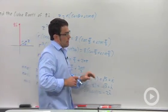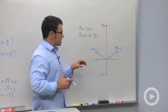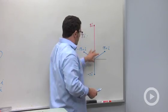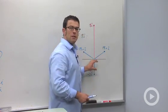And in addition to that, let's take a look at the graph of these numbers. I've plotted them out here. Notice, all three of them have a modulus of 2. They all have the same distance from 0.